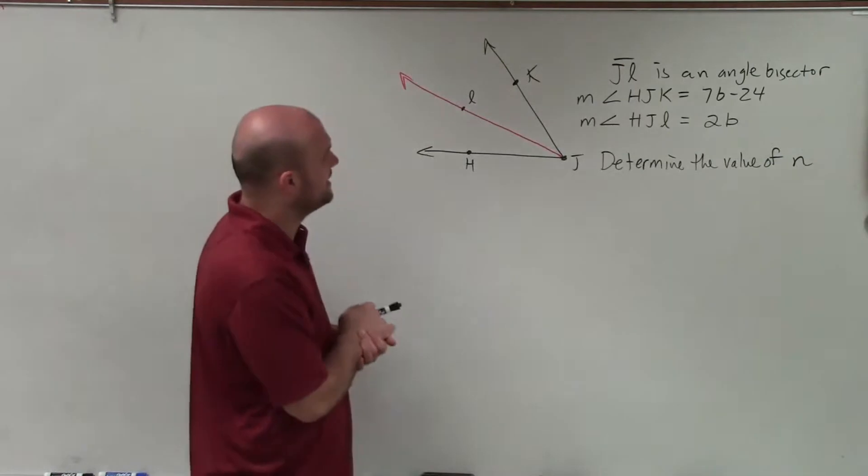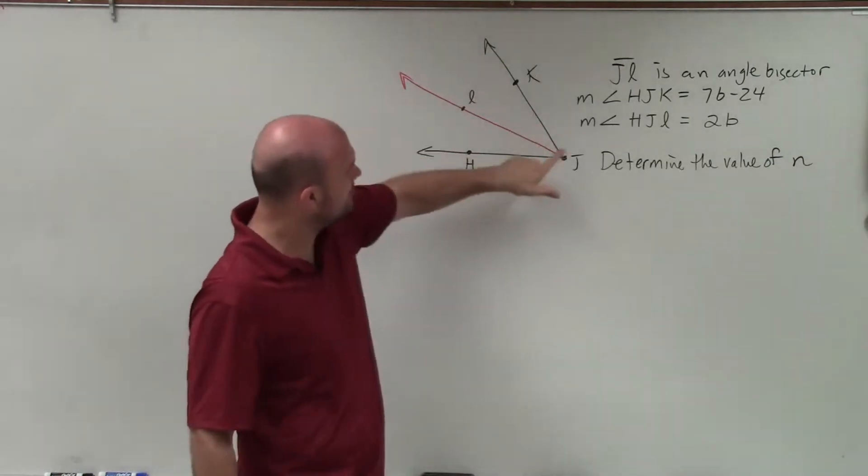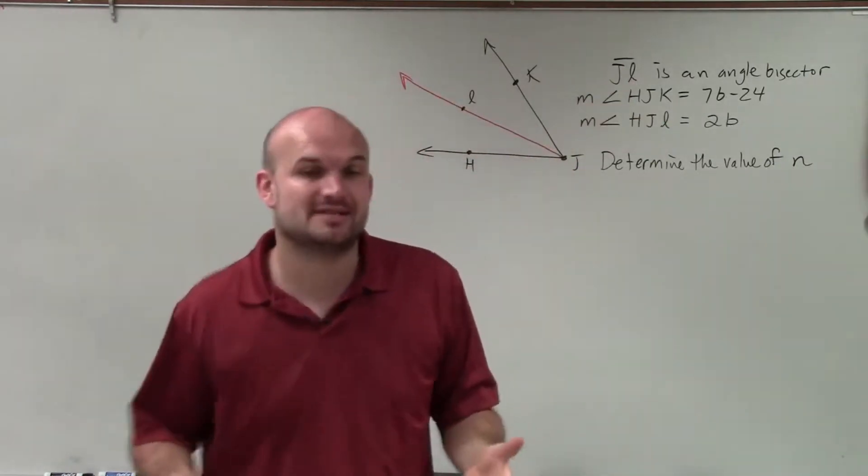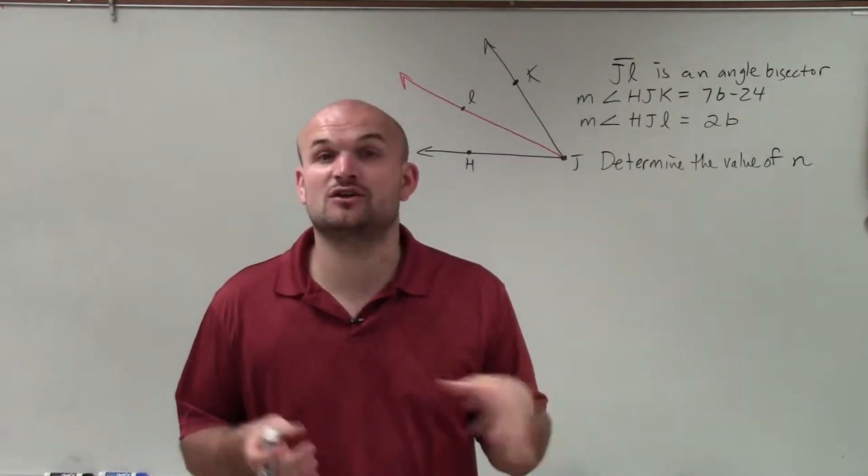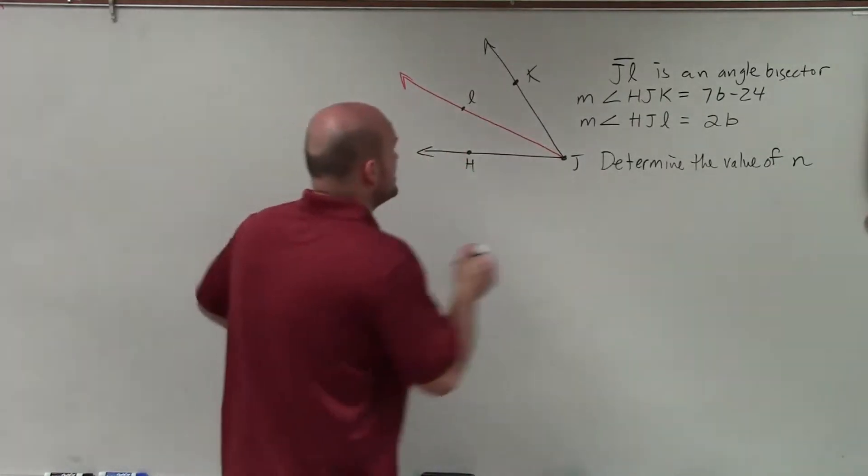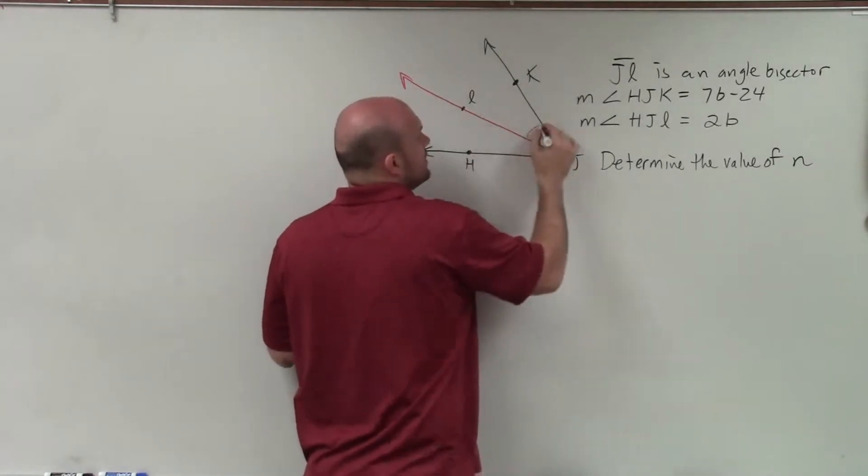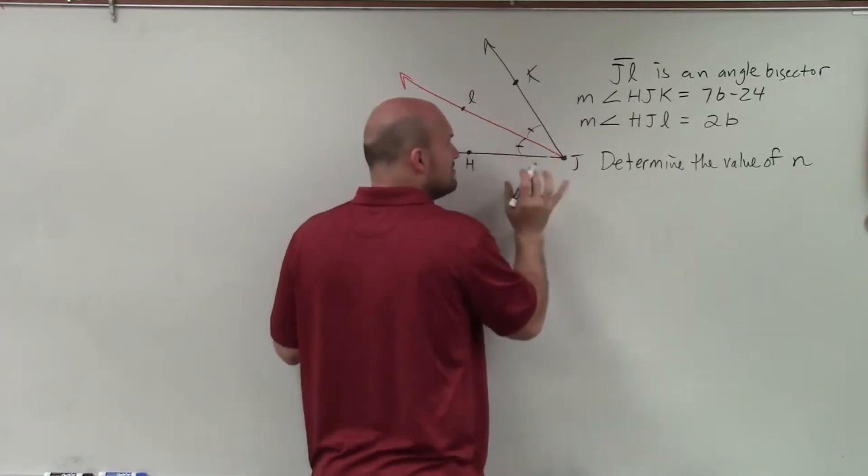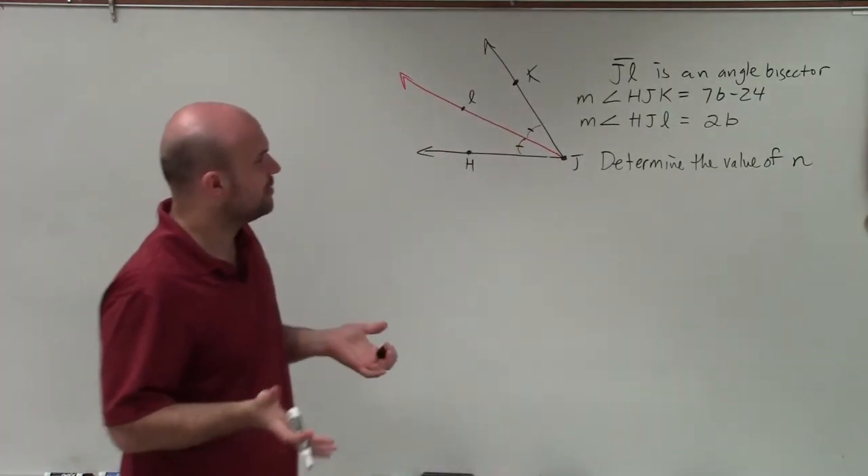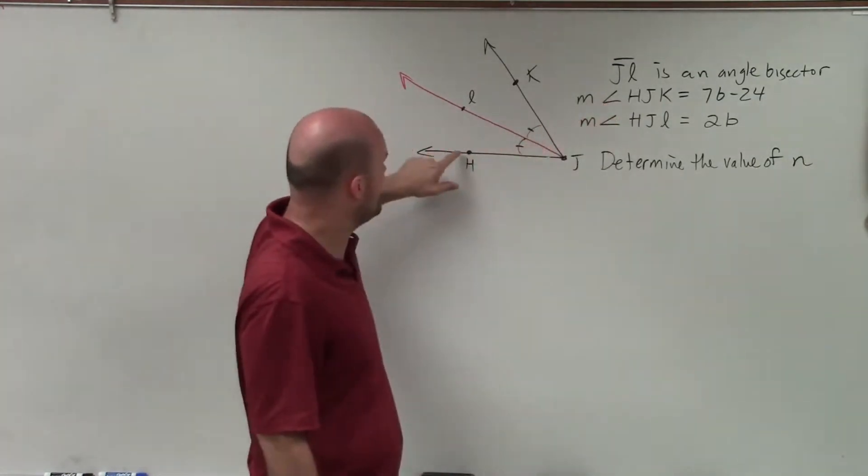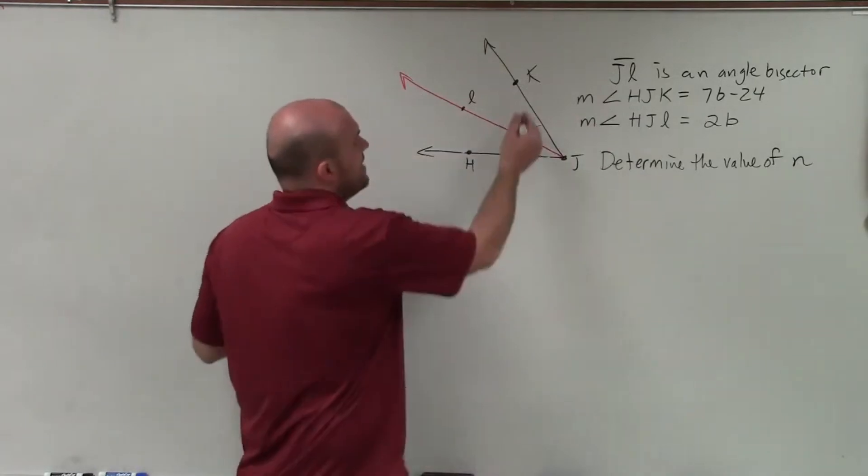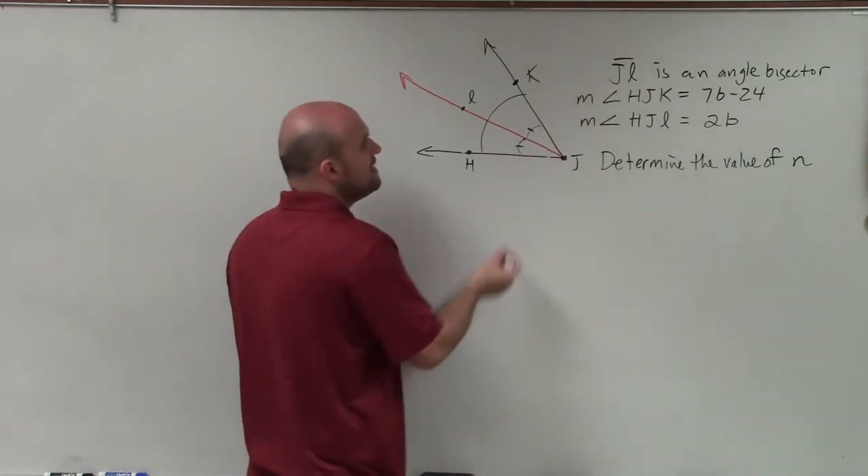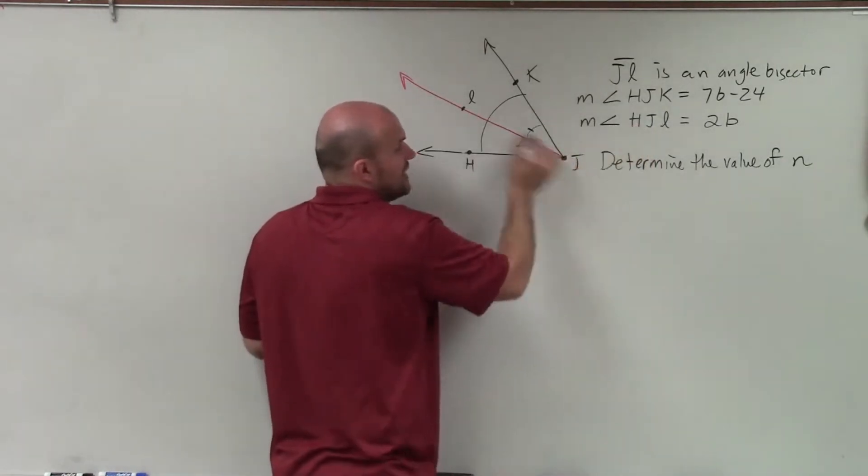Welcome. In this problem, again, I'm given the same angle, so I have this large angle, and I'm providing an angle bisector, which we label JL. Now remember the definition of an angle bisector. An angle bisector is a ray that is going to divide an angle into two congruent angles. So we can say that the measure of angle KJL is equivalent to the measure of angle HJL, right? These two are equal in measure by the angle bisector. So let's go and look at what we have. Well, they're giving us the angle of HJK, H to J to K. So they gave us the measure of the large angle, right? The large angle is 7B minus 24. Then they gave us the measure of one of the smaller angles, HJL.